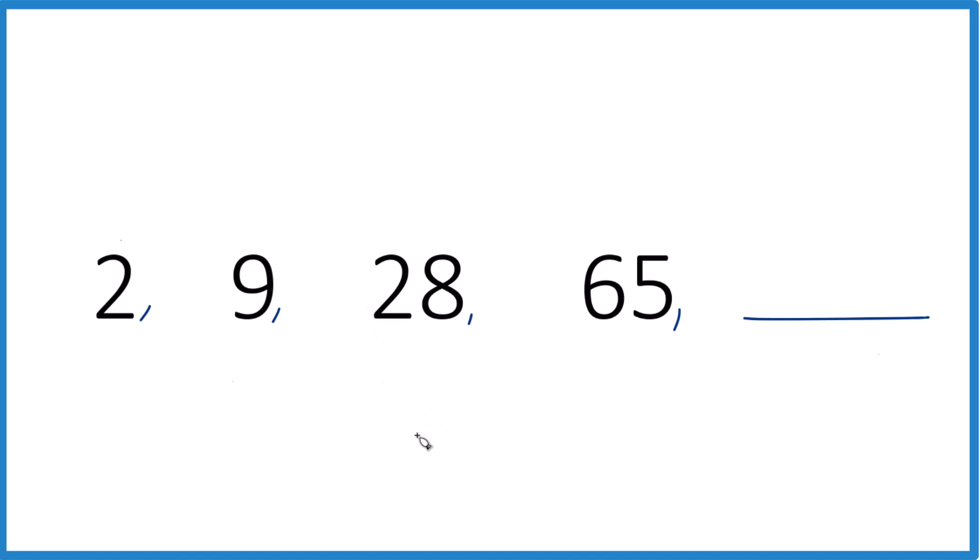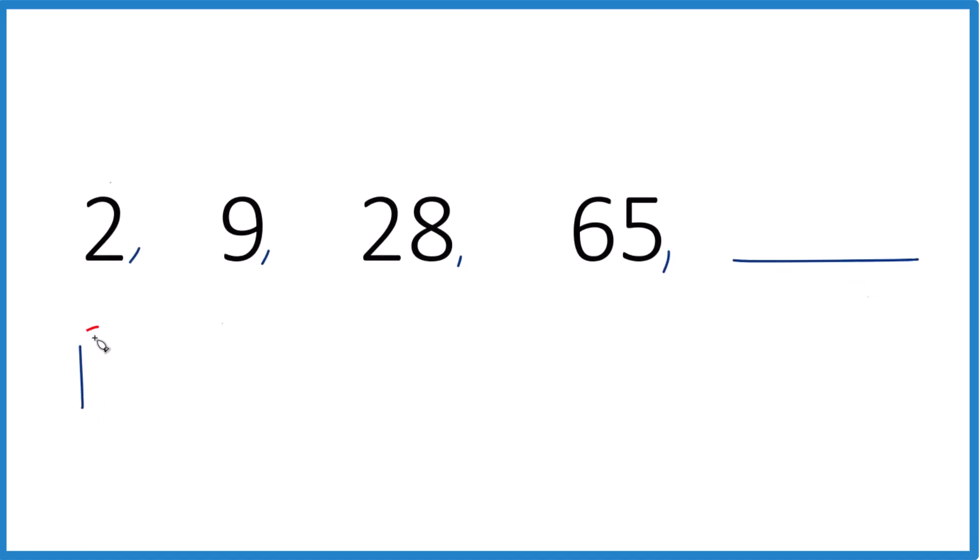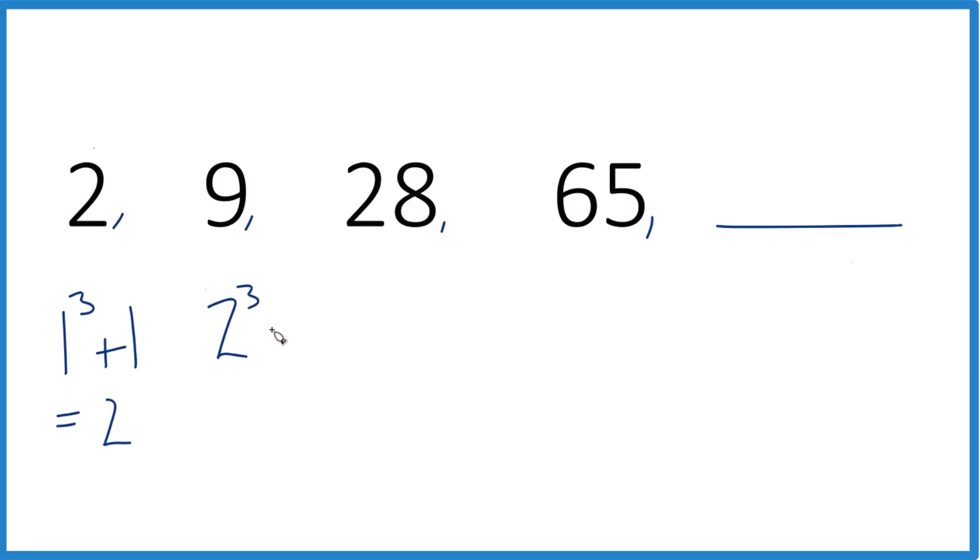So 1 to the third power is 1, plus 1, that would give me 2. Here, 2 to the third power gives me 8, plus 1, that gives me 9. So that would work. 3 to the third power is 27, plus 1, that gives me 28. I think this is working.